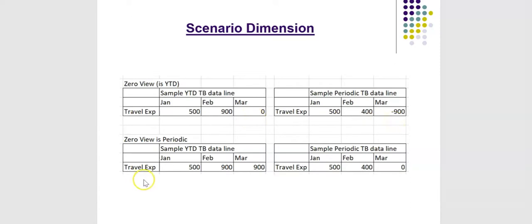Now let us understand Zero View Periodic. In this example, March has a value of 0 in the periodic trial balance, meaning there is no value in the month of March for this travel expense. As of February there is a YTD value of 900, and since there are no expenses in March, the YTD of March is also 900. The system calculates 900 in the month of March for the YTD view.